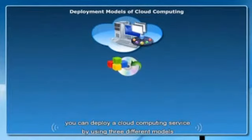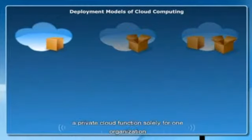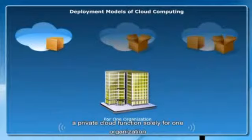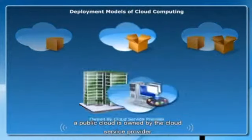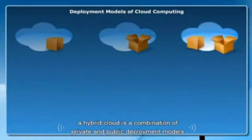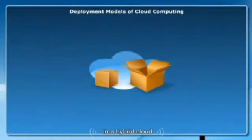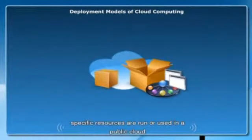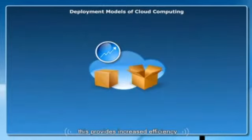You can deploy a cloud computing service using three different models: a private cloud, a public cloud, or a hybrid cloud. A private cloud functions solely for one organization on a private network and is highly secure. A public cloud is owned by the cloud service provider and offers the highest level of efficiency in shared resources. A hybrid cloud is a combination of private and public deployment models, where specific resources are run in a public cloud and others on-premises in a private cloud, providing increased efficiency.